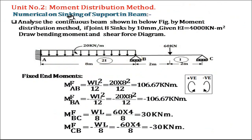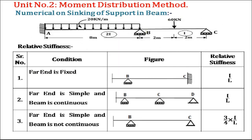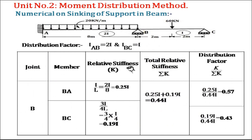In the first video on the numerical on sinking of support in a continuous beam, we saw the statement of the numerical problem, then we found the fixed end moments in different members of continuous beam ABC. Fixed moment in member AB is 106.67, in BA it is minus 106.67, in BC it is plus 30 kNm, and in CB it is minus 30 kNm. We also found the distribution factor for member BA as 0.57 and for member BC as 0.43.